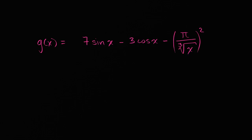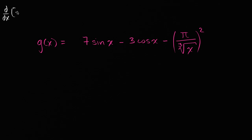But as we'll see in this video, we can actually do this with the tools already in our toolkit, using our existing derivative properties, using what we know about the power rule, which tells us that the derivative with respect to x of x to the n is equal to n times x to the n minus one. We've seen that multiple times.